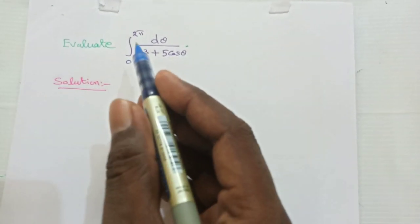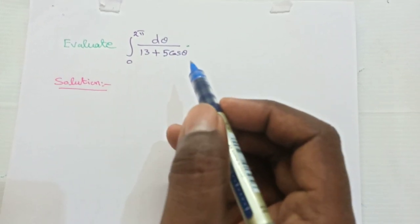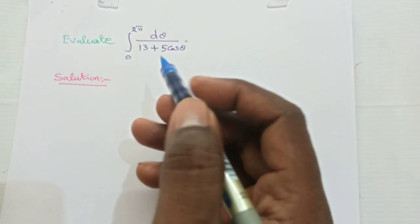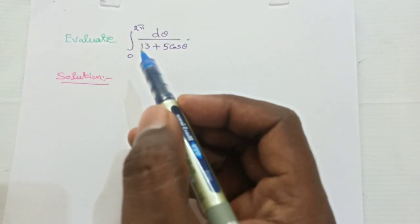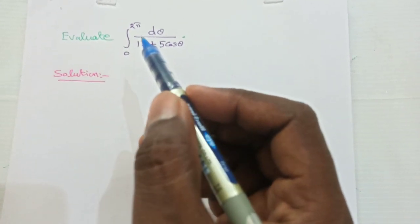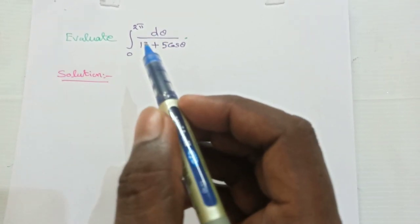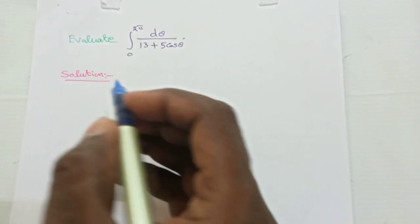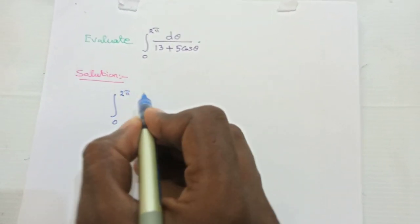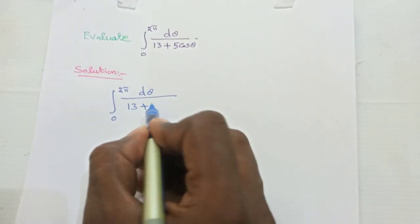Evaluate integral 0 to 2π dθ/(13 + 5cosθ). This is a contour integral of Type 1 because Type 1 involves an integral with limits 0 to 2π and a function involving sine or cosine theta. Here the function involves cosθ, so this is a contour integral of Type 1. The given integral is ∫₀²π dθ/(13 + 5cosθ).